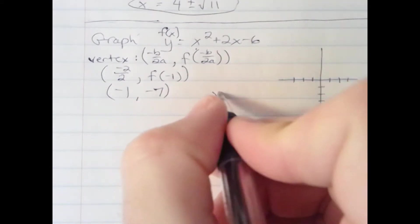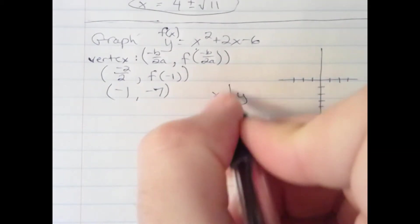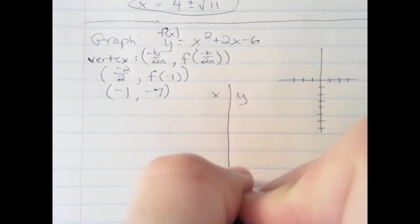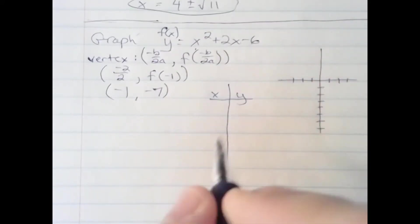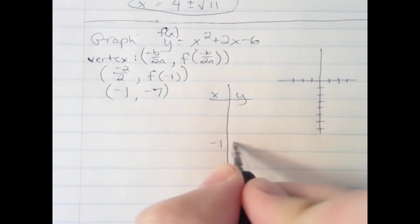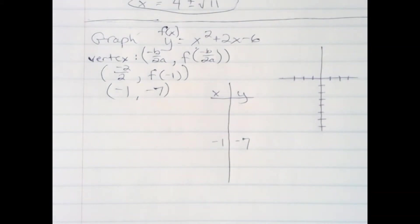Now I'm going to set up a t-table with x and y-coordinates. And I'm going to put the vertex here. Now, because of the symmetry of a parabola, which is also known as the graph of a quadratic, I'm going to choose two values around it.